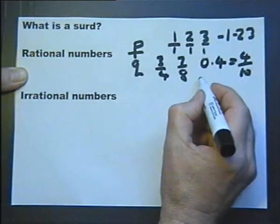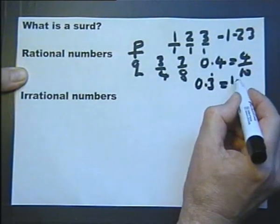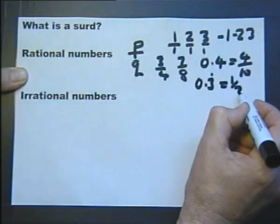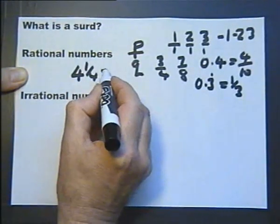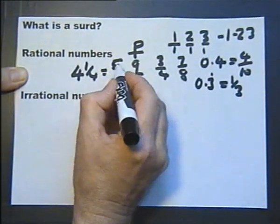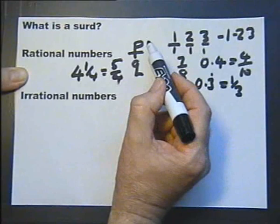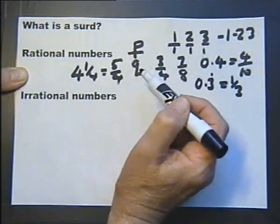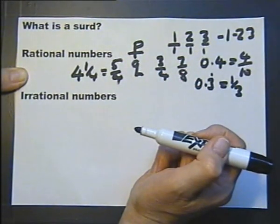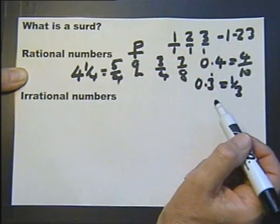Recurring decimals — any recurring decimal — can also be written as a fraction. And mixed numbers can also be written as fractions. So all numbers that can be written as a fraction with a whole number over a whole number are rational, and of course all of these can then be plotted on a number line.